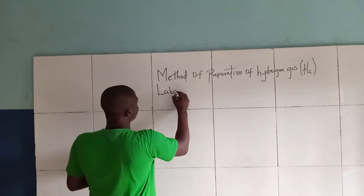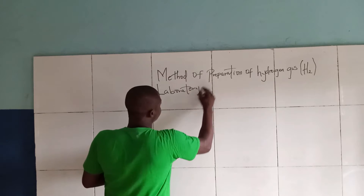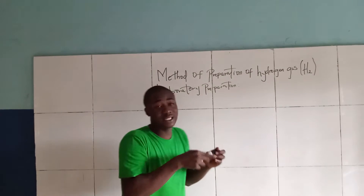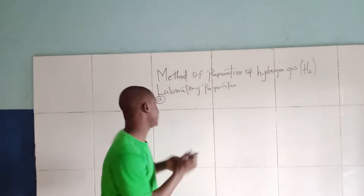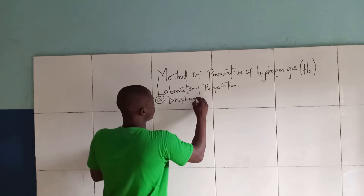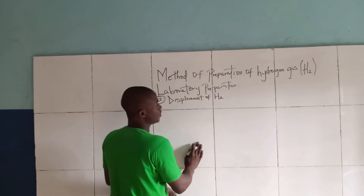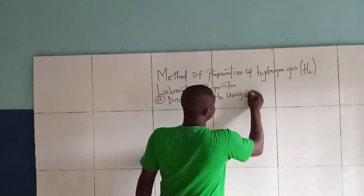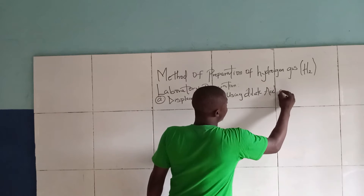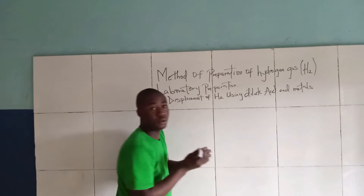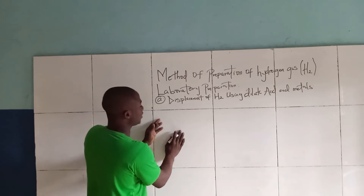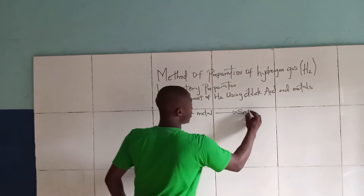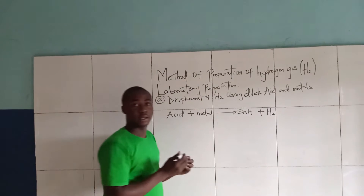The laboratory preparation. The first process for the displacement of hydrogen gas is displacement of hydrogen gas using dilute acids and metals. Let's take an example. This is an acid reacting with a metal. We are going to get a salt and also liberate hydrogen gas.